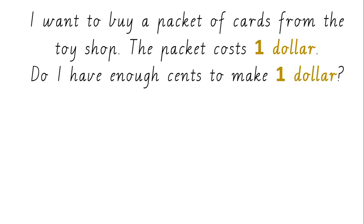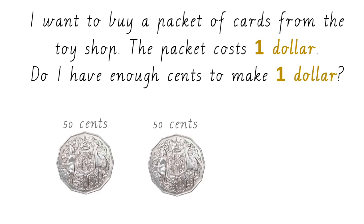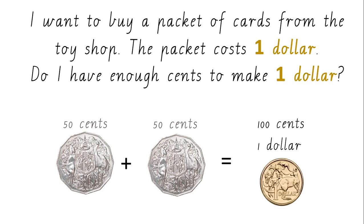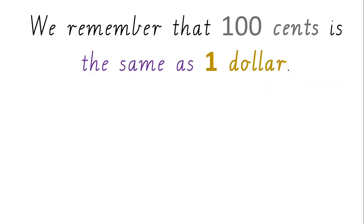I want to buy a packet of cards from the toy shop. The packet costs one dollar. Do I have enough cents to make one dollar? I have a 50 cent coin and another 50 cent coin. 50 cents plus 50 cents equals 100 cents, or one dollar. I do have enough money to buy a packet. We remember that 100 cents is the same as, or equal to, one dollar — one dollar and zero cents.